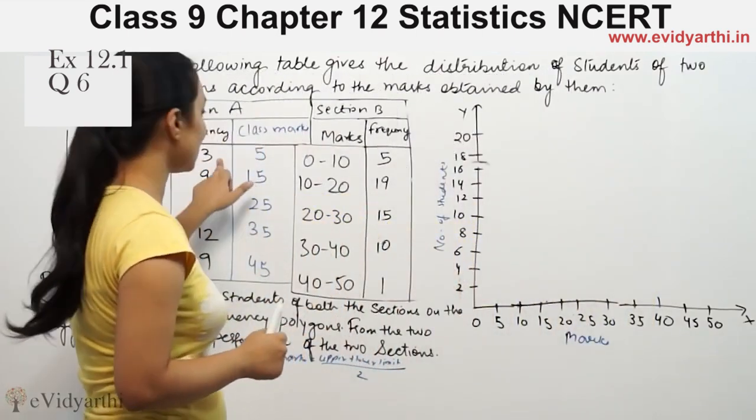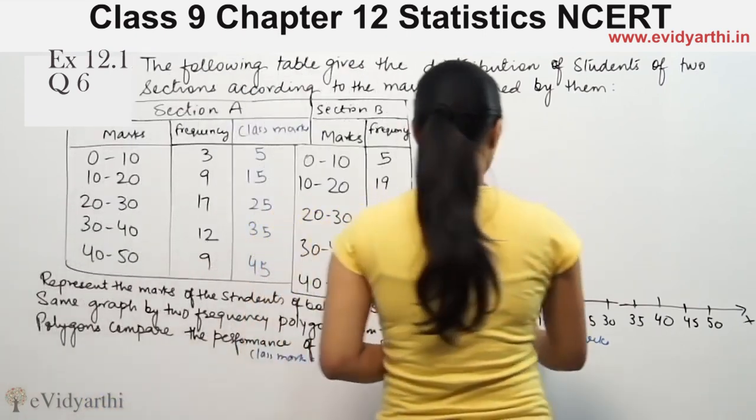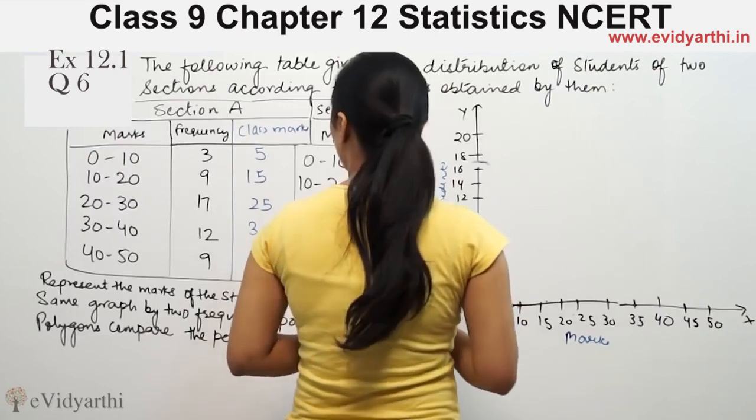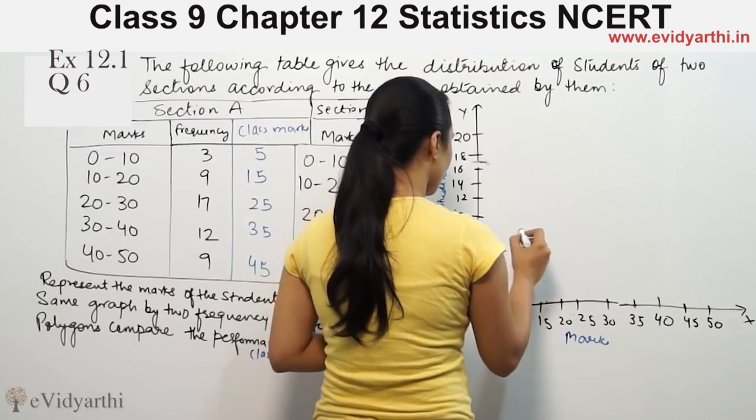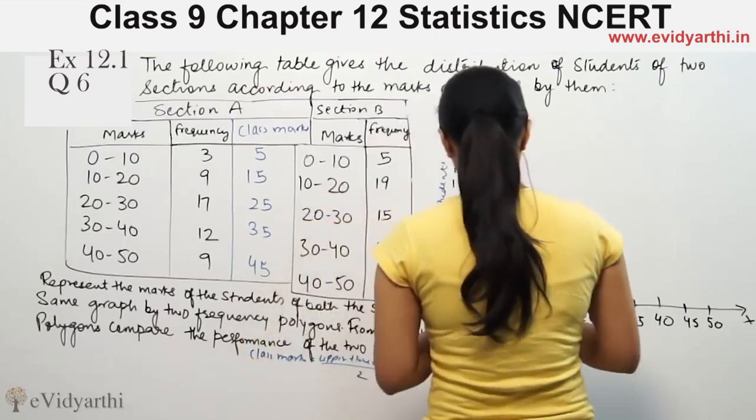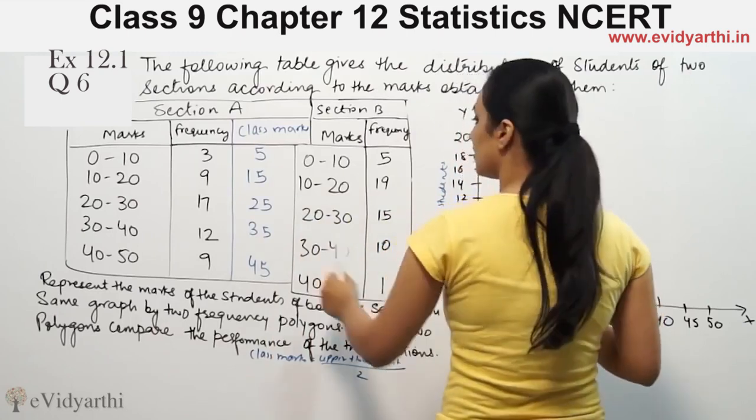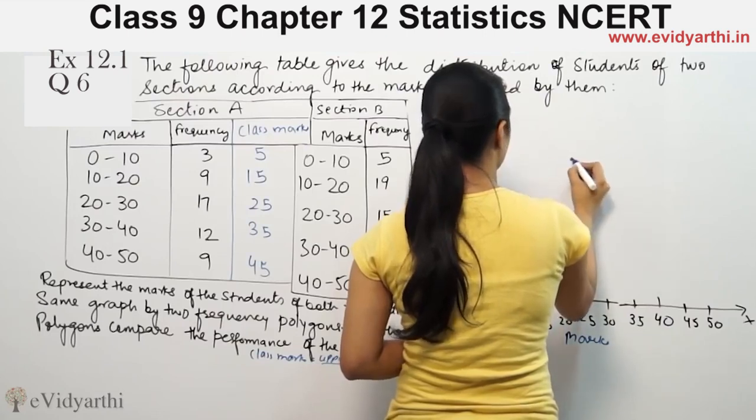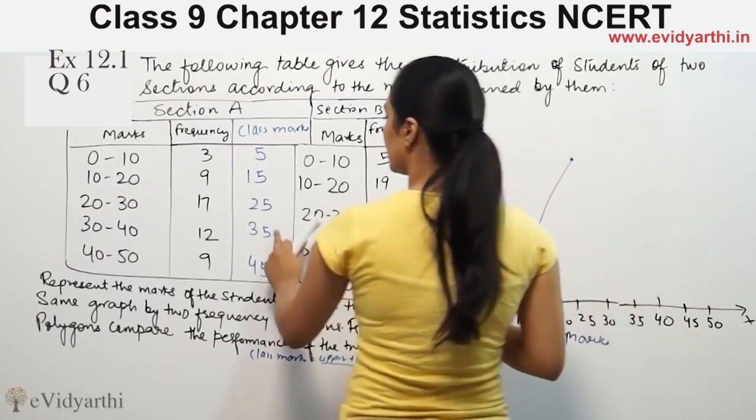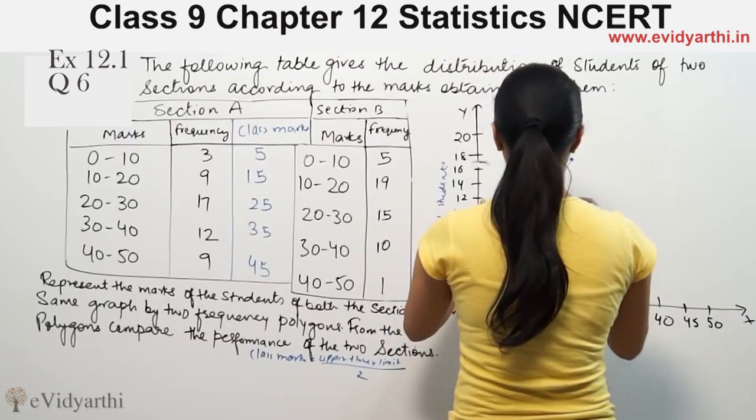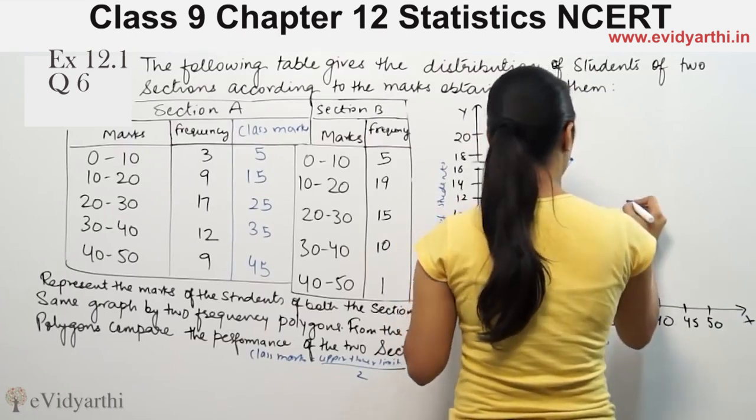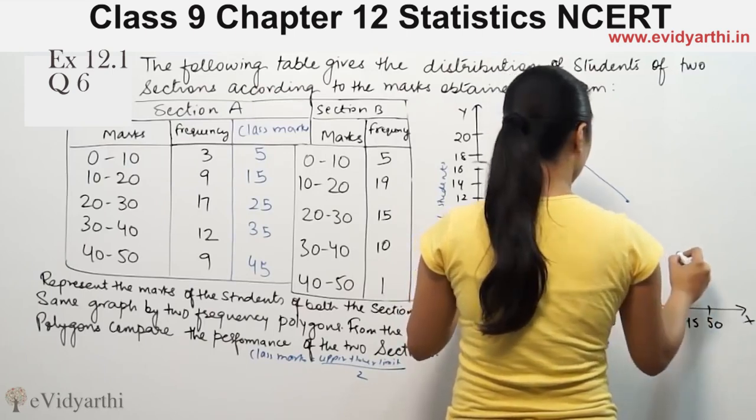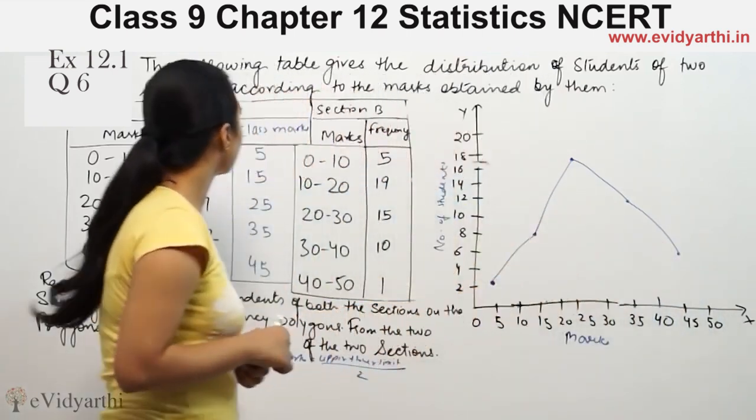For Section A, the frequency is 3 at class mark 5, so we plot point (5, 3). Then 15 and 9, so we plot (15, 9). Then 25 and 17. Then 35 and 12. Then 45 and 9. This is for Section A.